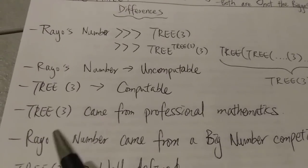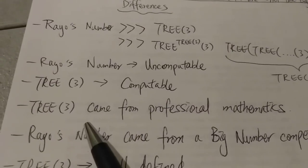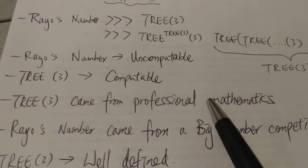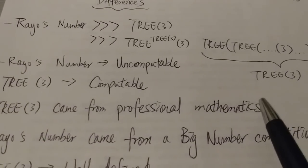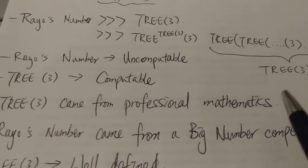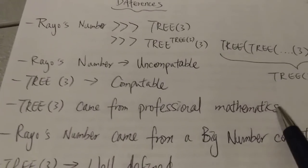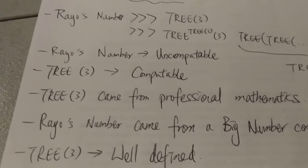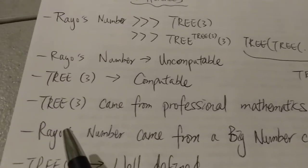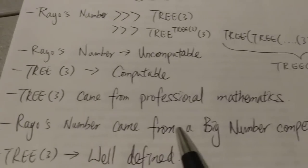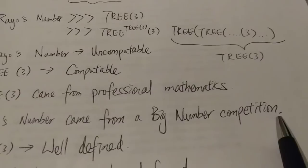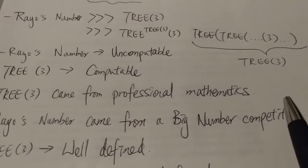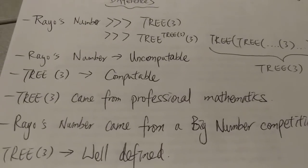So and then the next difference is that TREE(3) actually came from professional mathematics. So it actually came from a mathematical problem, a serious mathematical problem with a proof, which is pretty complicated. That's why it's hard to explain what is TREE(3). But on the other hand, Rayo's number came from a big number competition, which is whoever can come up with the biggest number. That's basically the idea.